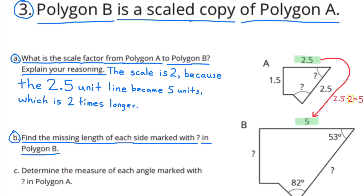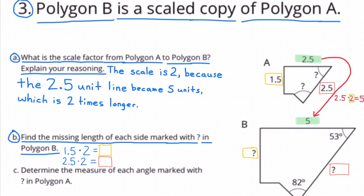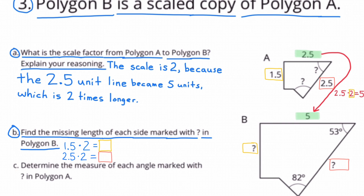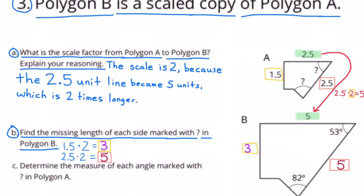Part B: Find the missing length of each side marked with a question mark in polygon B. I wrote equations to represent the question marks: 1 and 5 tenths times 2 equals the unknown amount, and 2 and 5 tenths times 2 equals the unknown amount. 1 and 5 tenths times 2 equals 3, and 2 and 5 tenths times 2 equals 5. The missing side lengths are 3 and 5.